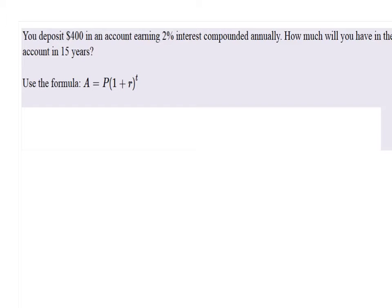So if we knew that, we'll have A equals, the amount we're depositing is $400, and then in parentheses we have 1 plus the rate, which was 2%.